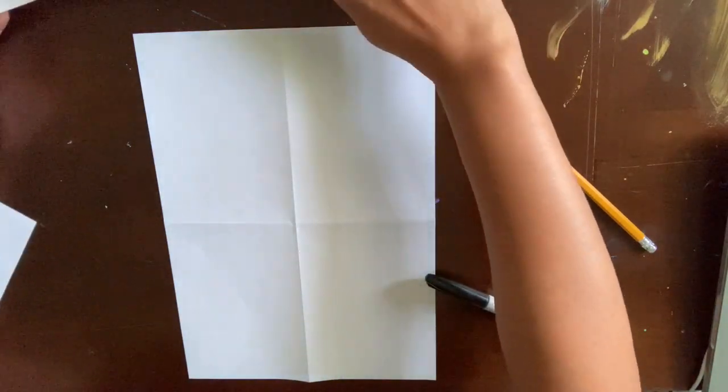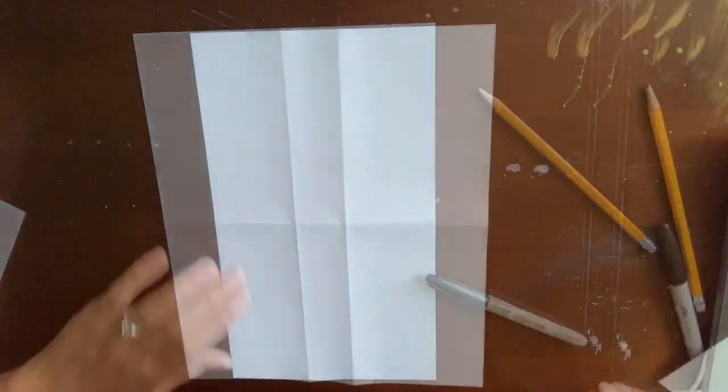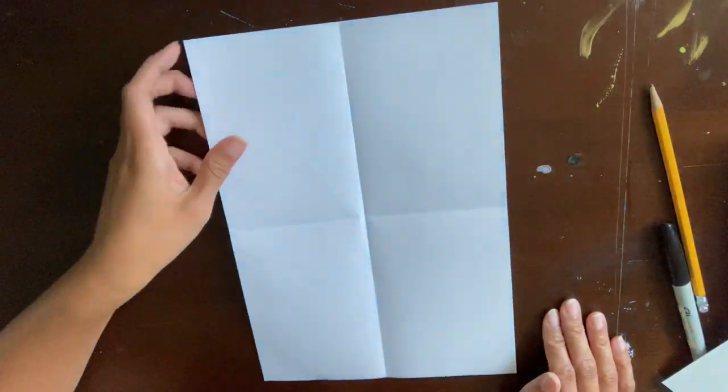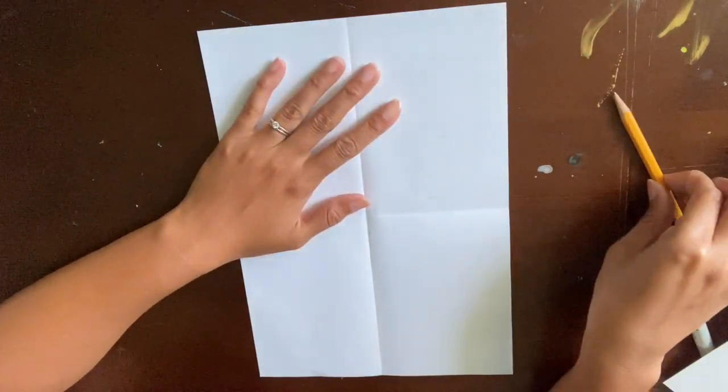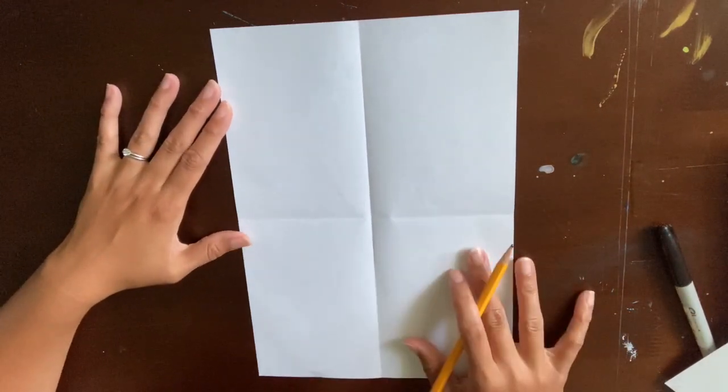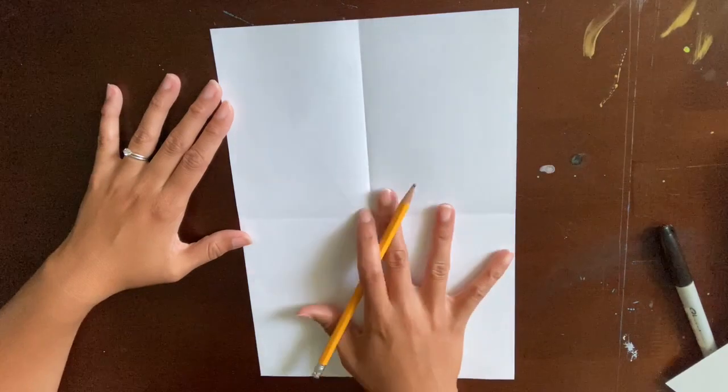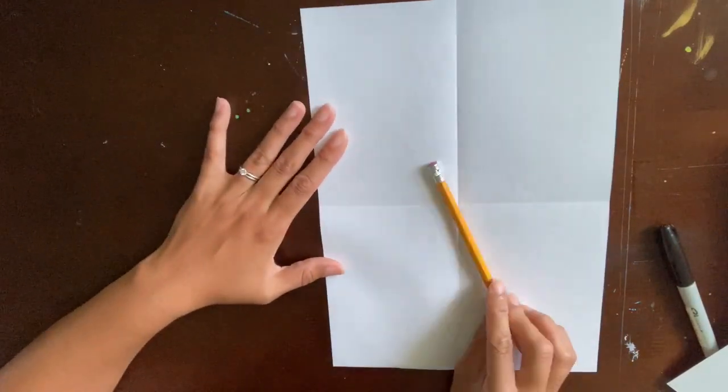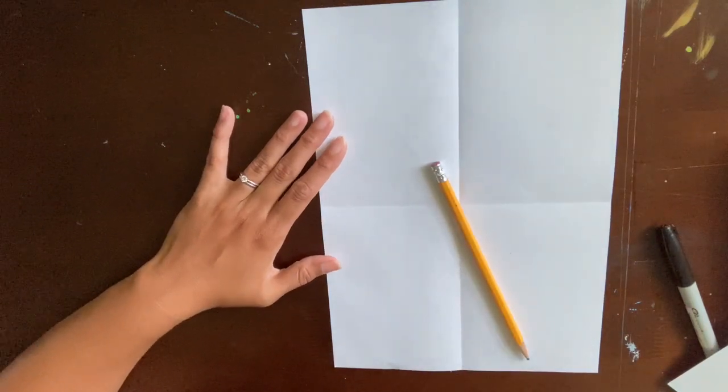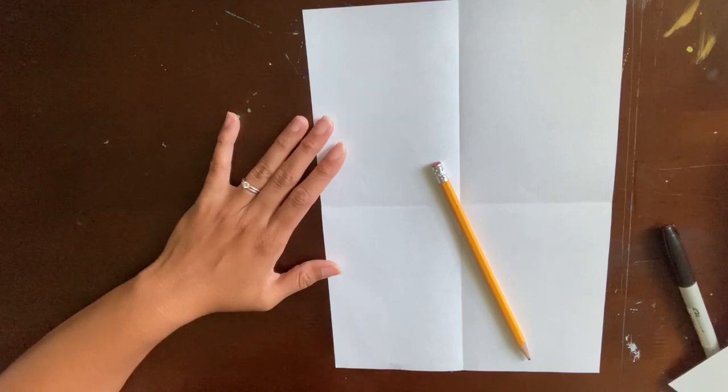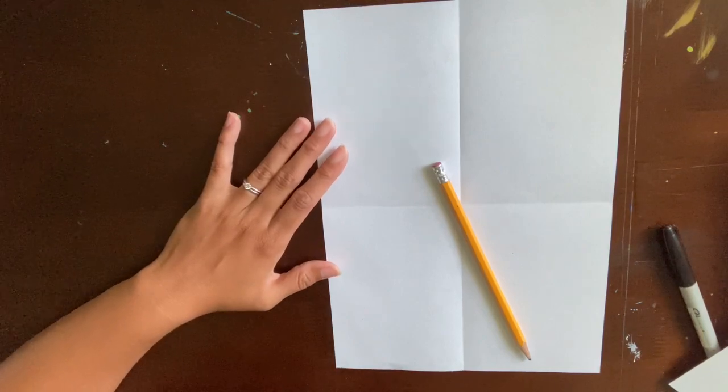So decide what the front and the back are going to be and we're going to do a practice one or you can just watch my practice one with a pencil. So I'm on the back for my practice one. So what you're going to do is you're going to be looking at an object and you're going to be drawing it without looking at the paper. What? That seems kind of hard. Okay let me show you.